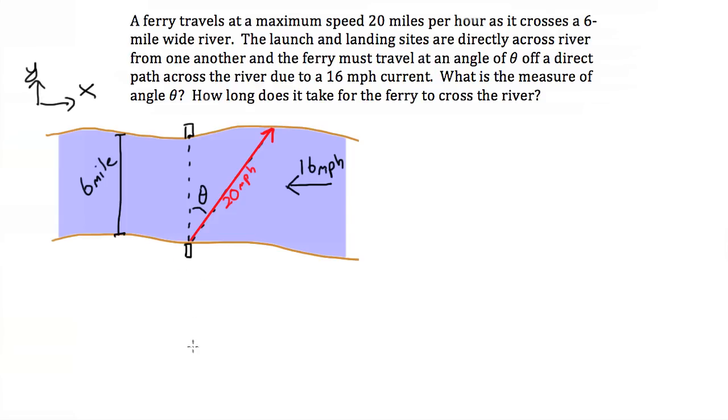Now let's break this velocity vector into its x and y components. The x component of our velocity vector is the amount of our velocity that's designed to counter this 16 mile an hour current.